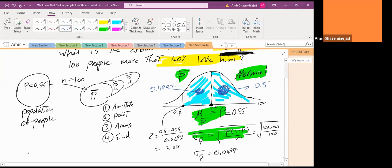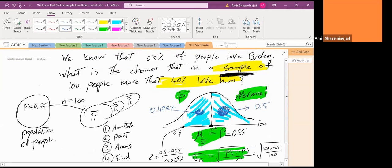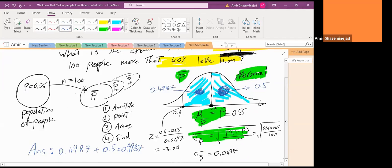Therefore, the answer is 0.4987 plus 0.5 equals 0.9987. So basically, look at the meaning. This means that if we know that 55% of people love Biden, then in a sample of 100, the chance that more than 40% love him is like close to 100%. Because in the population, more than 55% like him. So of course, in a sample, more than 40%, the chance that in the sample more than 40% will like him is a lot.